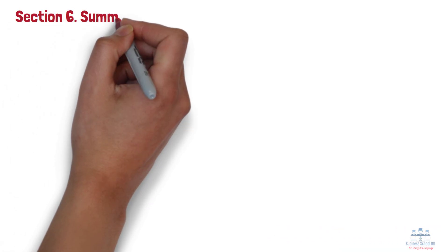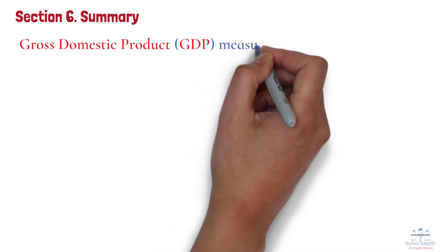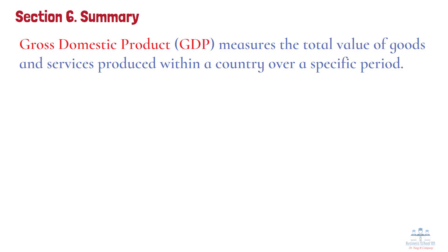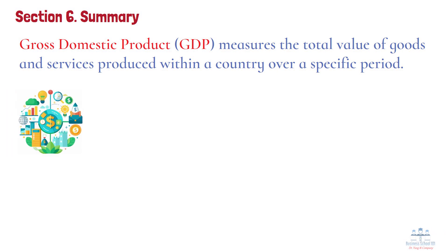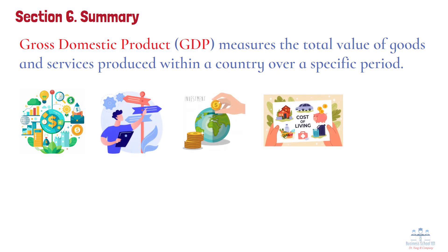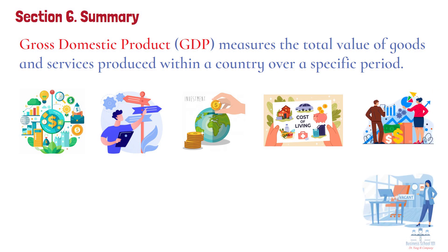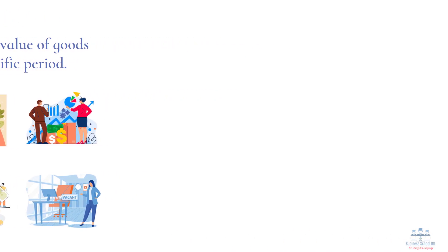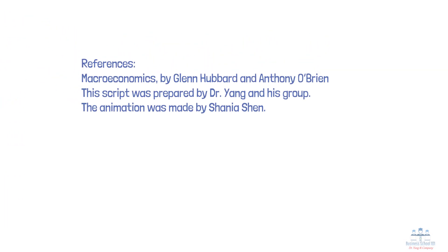Section 6: Summary. Gross domestic product, or GDP, measures the total value of goods and services produced within a country over a specific period. It's a critical economic indicator that reflects the health of a nation's economy, guiding policy decisions, investment, and insights into living standards. Understanding GDP helps assess economic growth, job opportunities, and overall economic stability, making it essential for informed decision-making by governments, businesses, and individuals. That's all for today's topic. If you find this video helpful, don't forget to like, share, and subscribe for more insights on economics and business knowledge. Thanks for watching, and I'll see you next time.